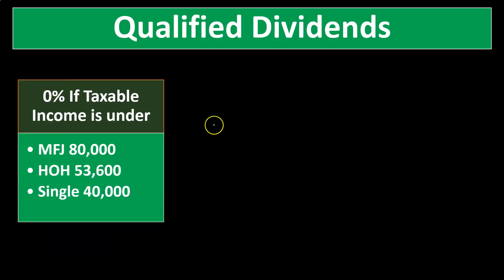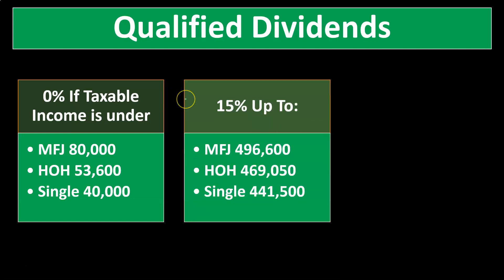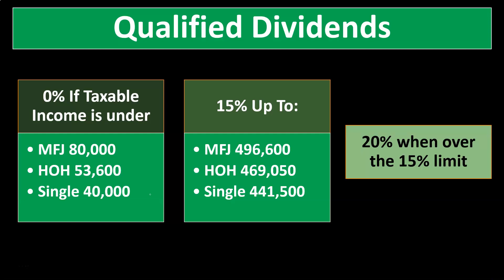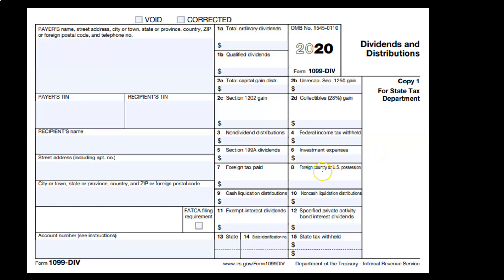For qualified dividends, the rate is 0% if the taxpayer is under: married filing joint — $80,000; head of household — $53,000; single — $40,000. Then at 15% if above those amounts: for married filing joint, above $80,000 and less than $496,600; for head of household, above $53,600 and below $469,050; for single, above $40,000 and below $441,500. If above those upper amounts, the rate is 20% — the maximum rate for qualified dividends.